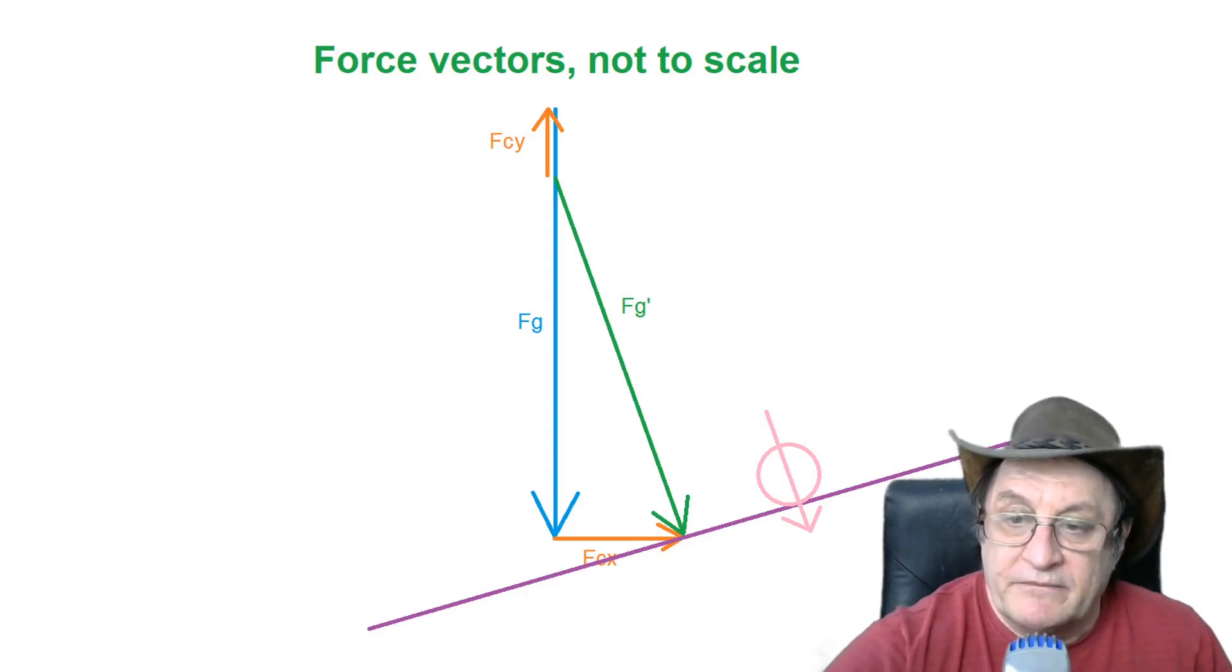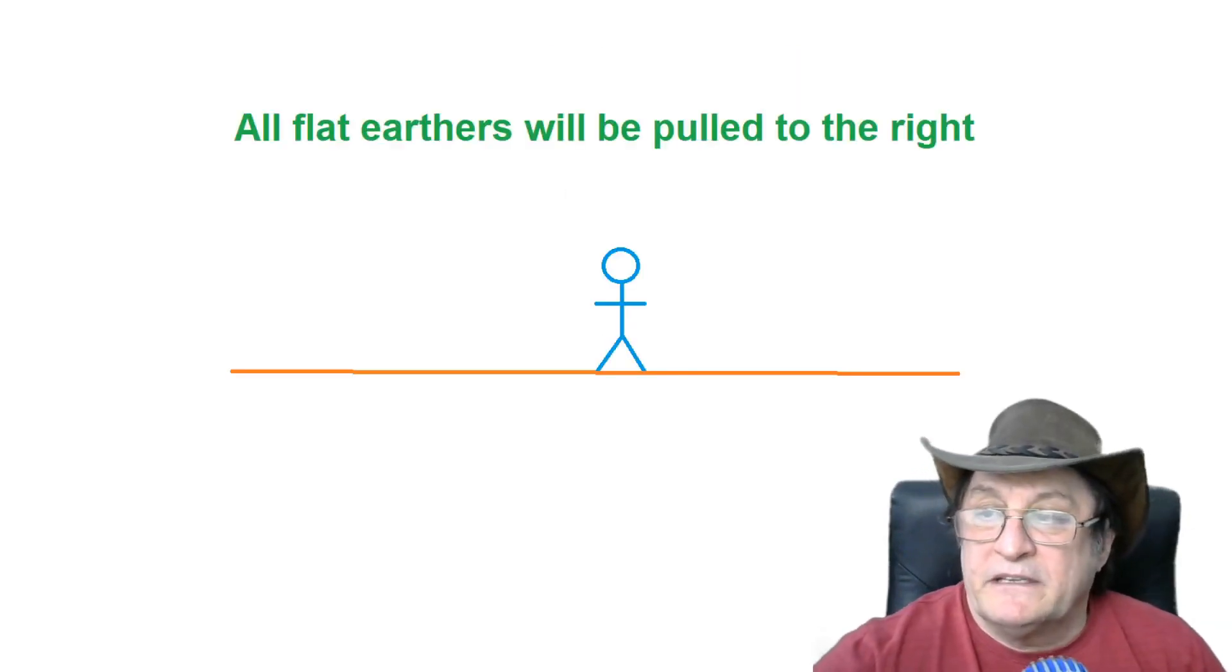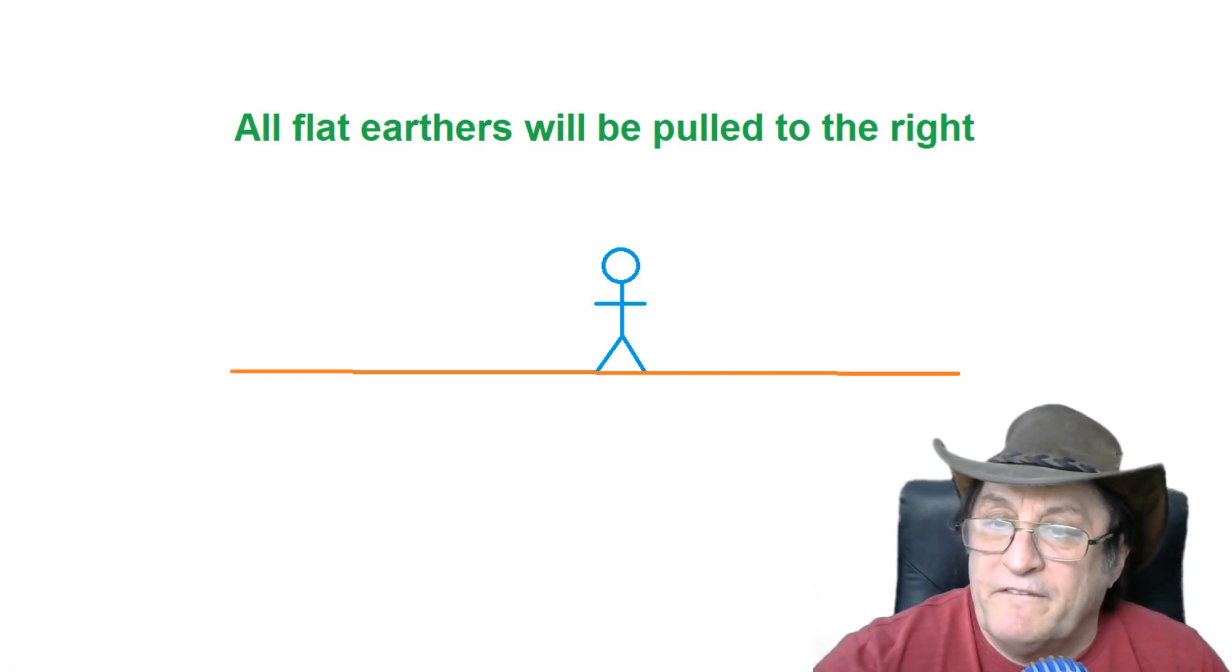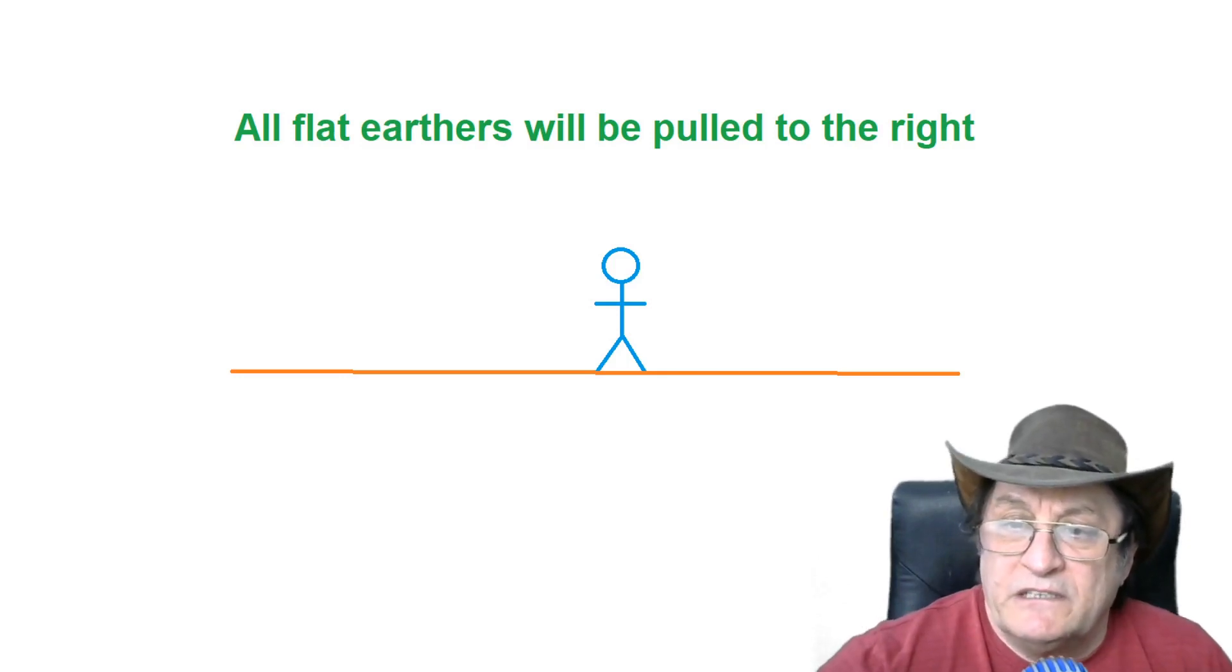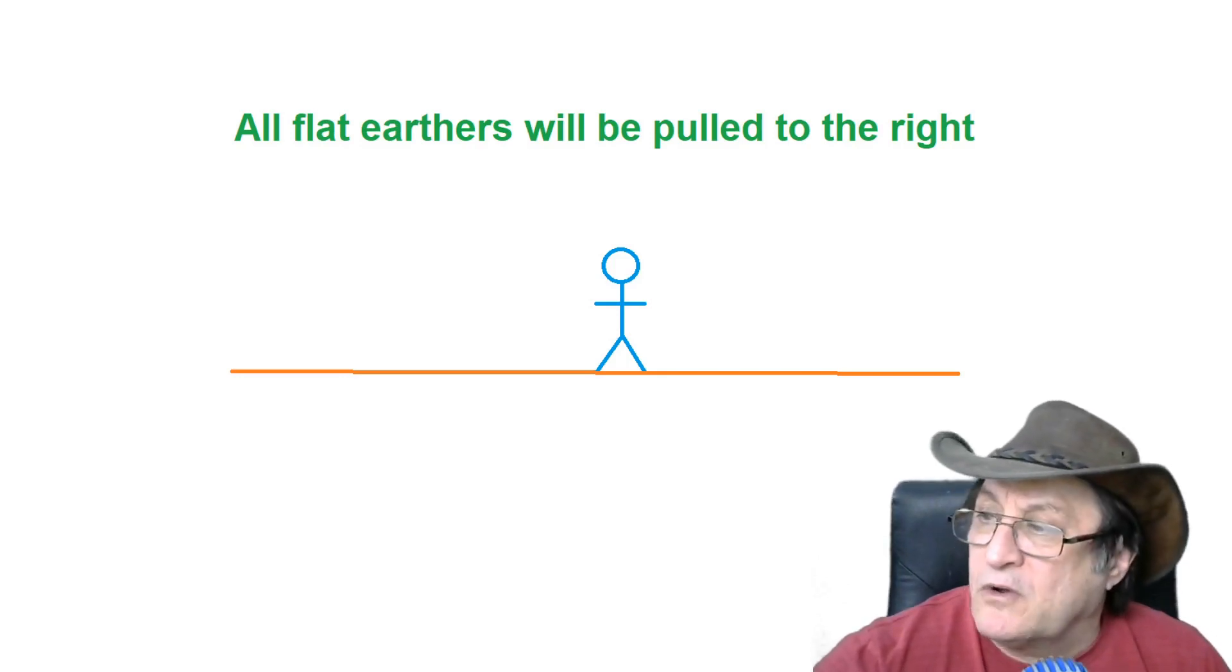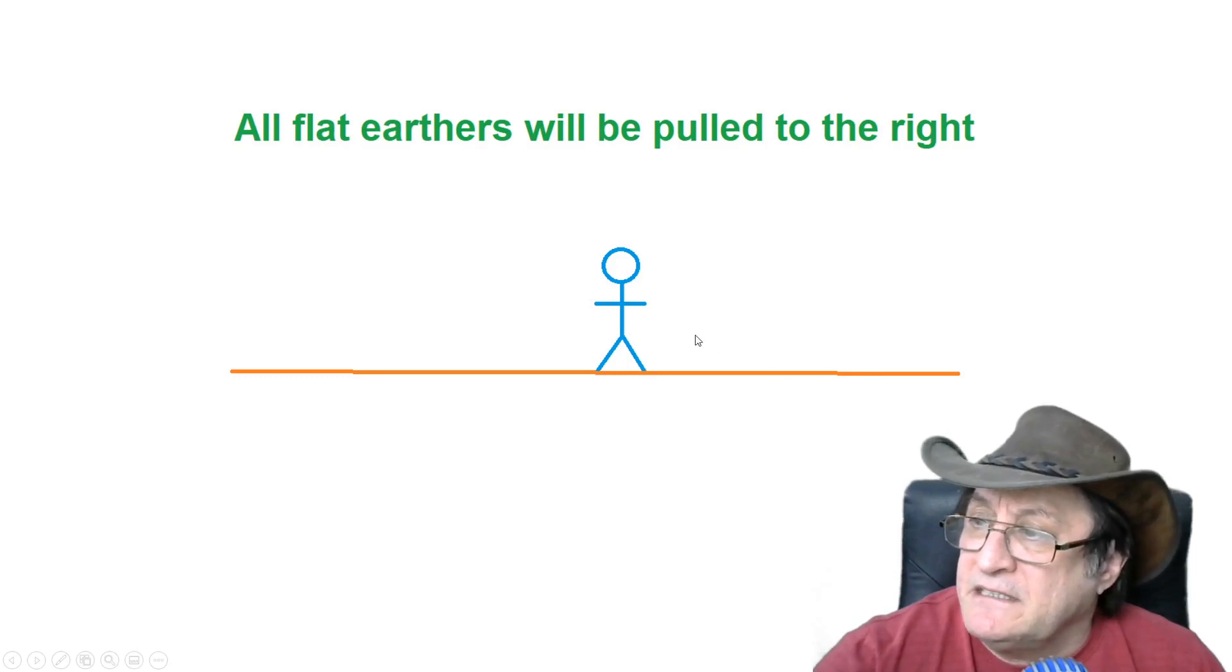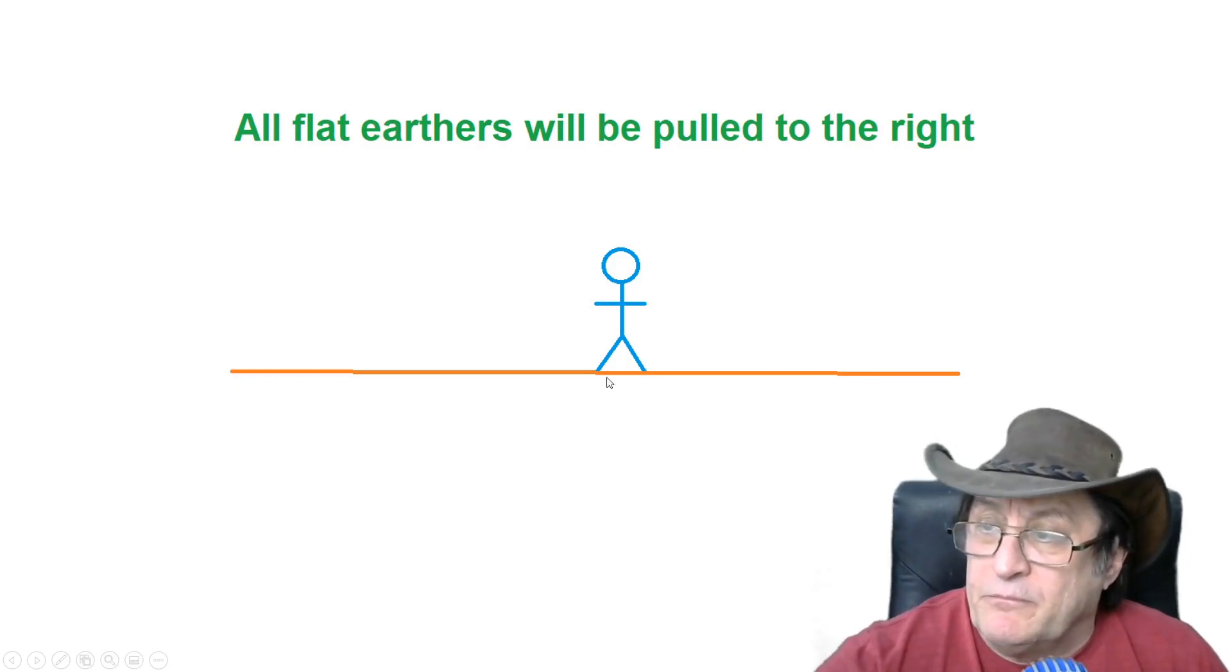So there you have it. Another thing too about this, this vector is out by a very, very small amount, 0.1 degree. So the argument is that you should be pulled towards the equator. Well, let's just see this flat earther here is on a 0.1 degree slope.